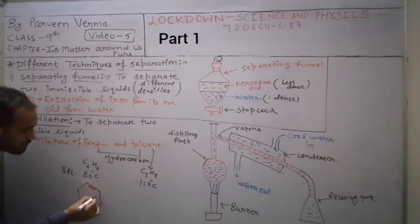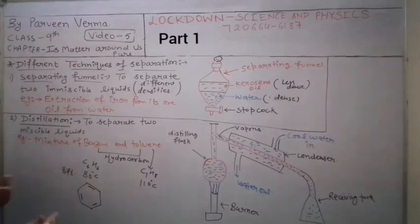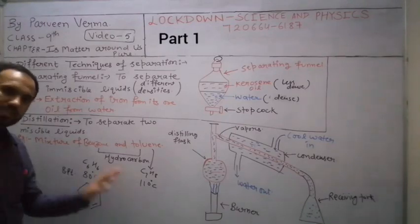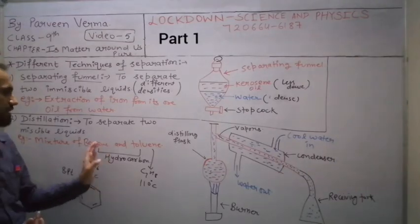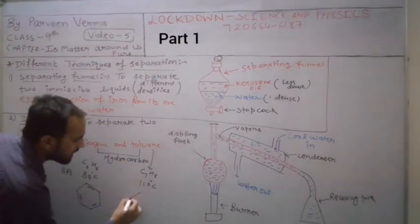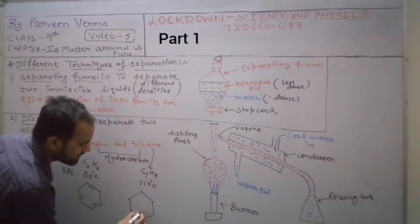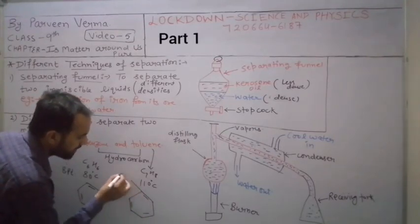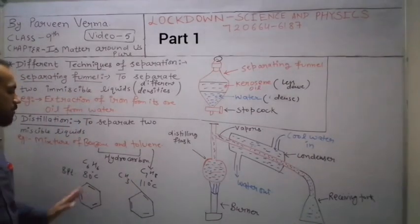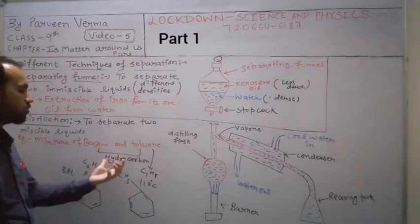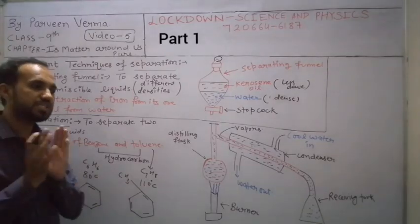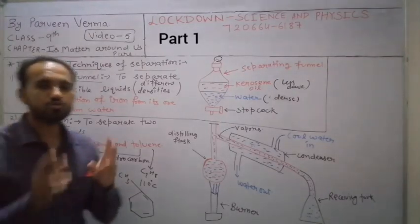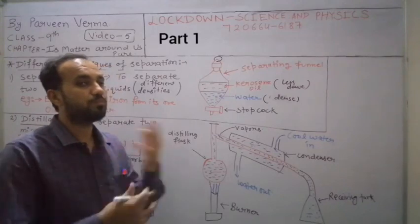If I show you the structures - benzene's structure looks like this with double bonds. This topic you will understand fully in 10th class; this is just extra information if you want to learn more. Toluene's structure is similar with a CH3 group attached. The key points are the different formulas and boiling points.